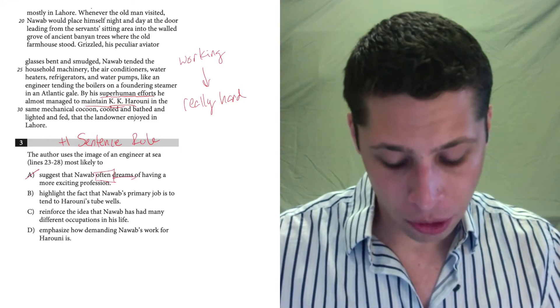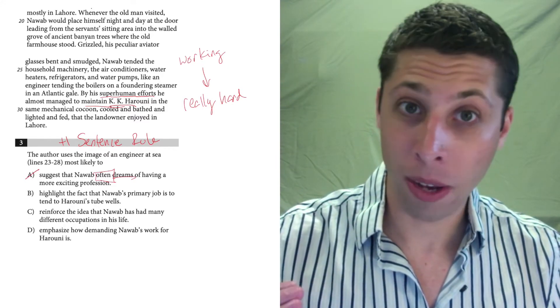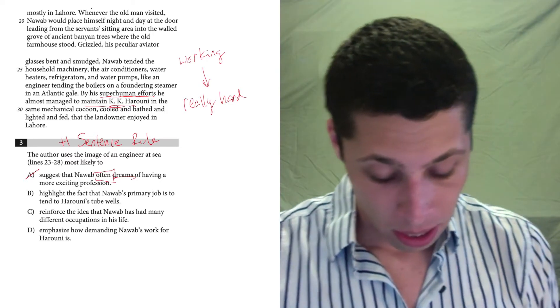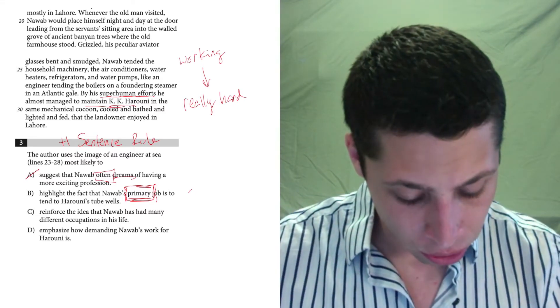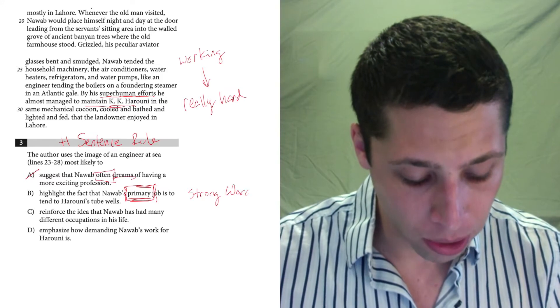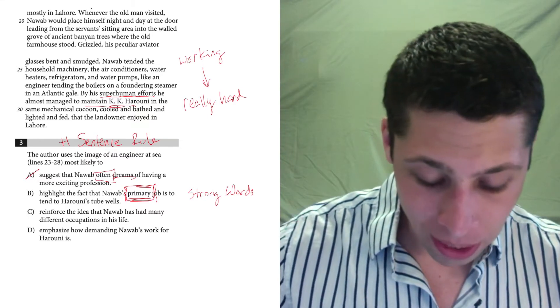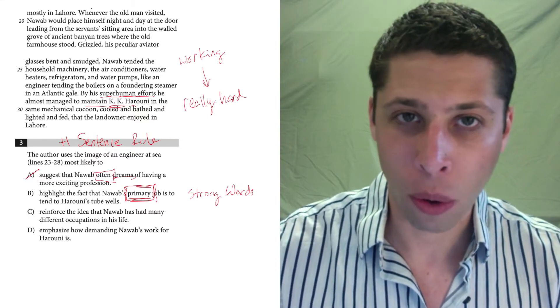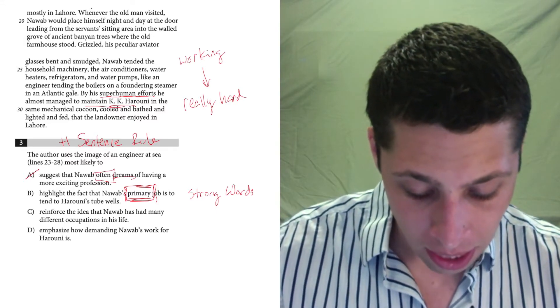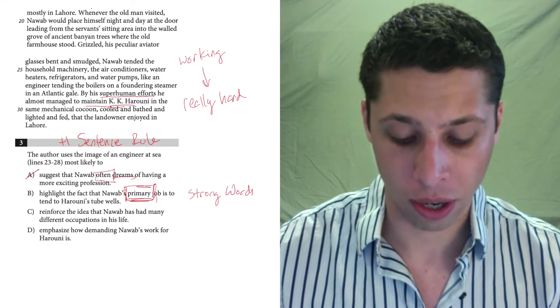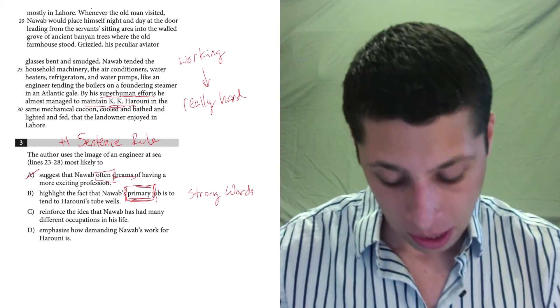B. Highlight the fact that Nawab's primary job is to tend to Haruni's tube wells. Well, first of all, it lists a bunch of things. So I don't know where this tube wells is being singled out. But also, just like the word often, the word primary is one of those kind of SAT strong words that I'd be really nervous about. Now, maybe it is his primary job, but I don't get that from the lines, from the evidence that I'm given. So I can't jump to the conclusion that this tube wells thing is the most important thing that he does. It seems like there's a bunch of things that he's in charge of. And so I don't want to jump to a conclusion and start ranking them. I don't have evidence of that in the passage. Gets rid of B.